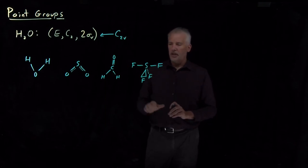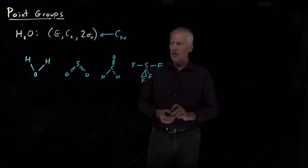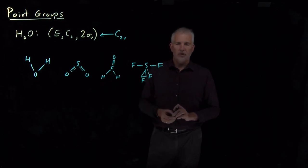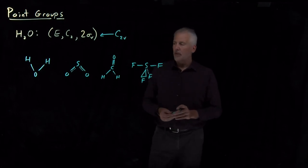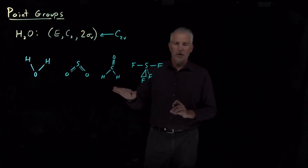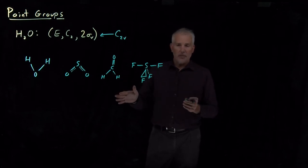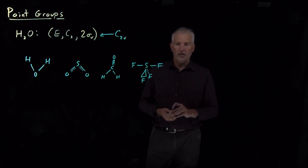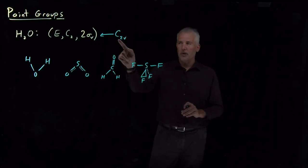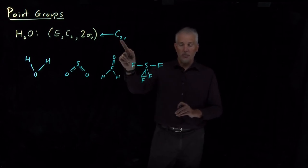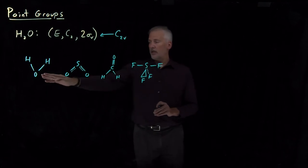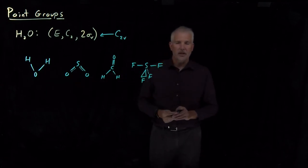All of these molecules and many others are in the C2V point group, even though they don't look like they have much in common. Because of their identical symmetries, many of their properties are related — for example, the shapes and symmetries of their molecular orbitals, the vibrational modes they can undergo, the polarity of the molecule, and the spectroscopy: what frequencies of light they can or can't absorb to change quantum mechanical states.